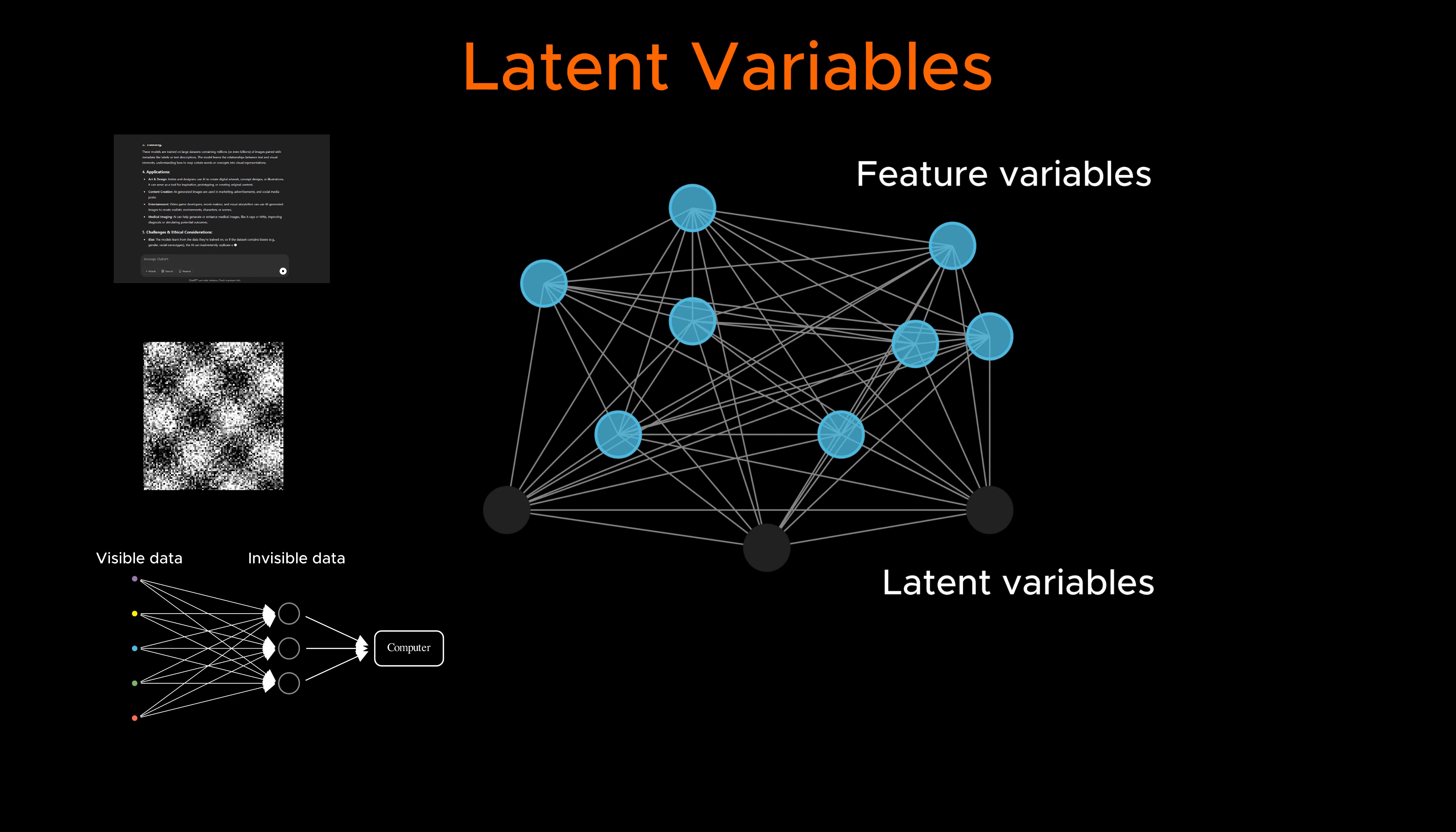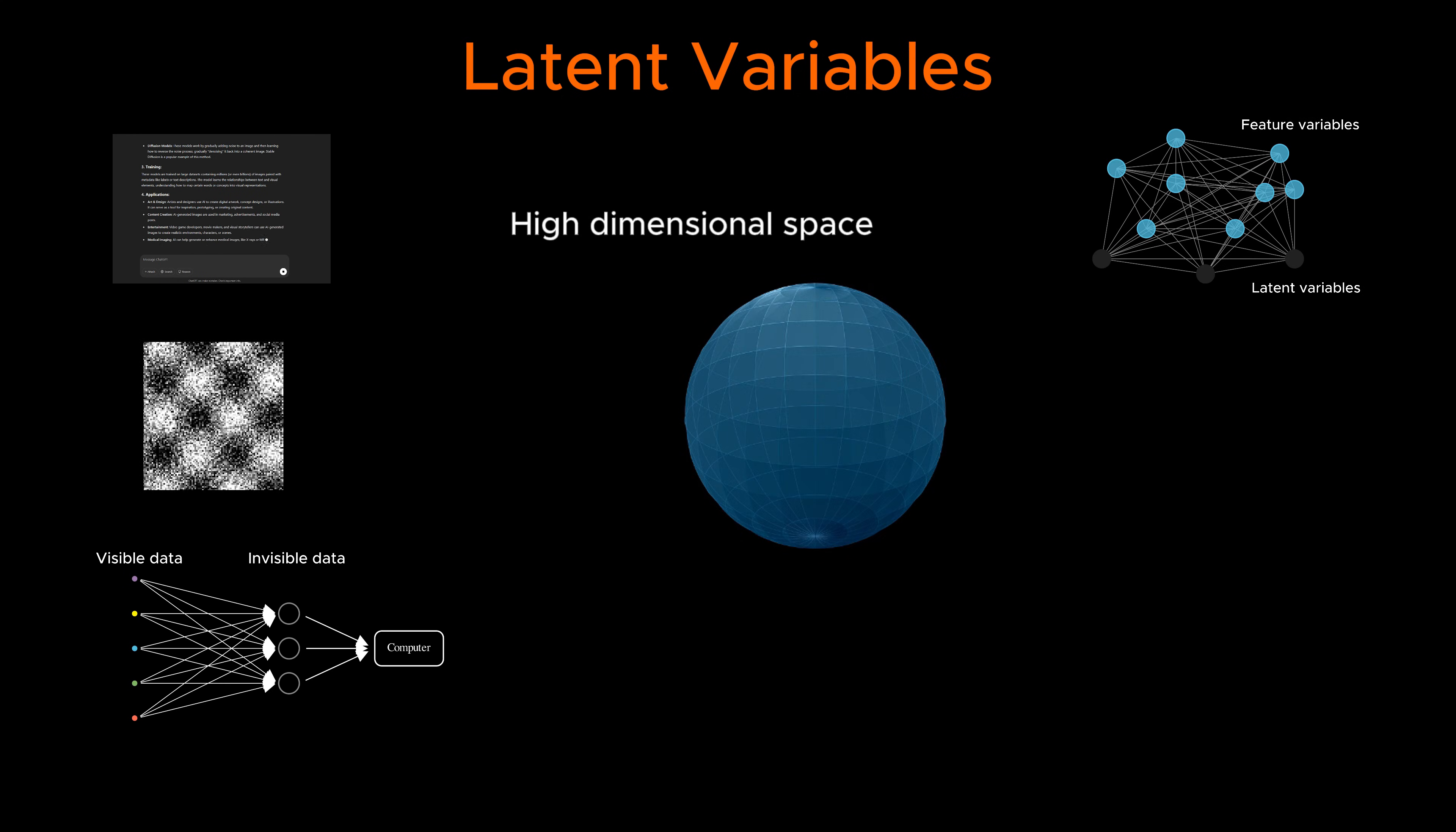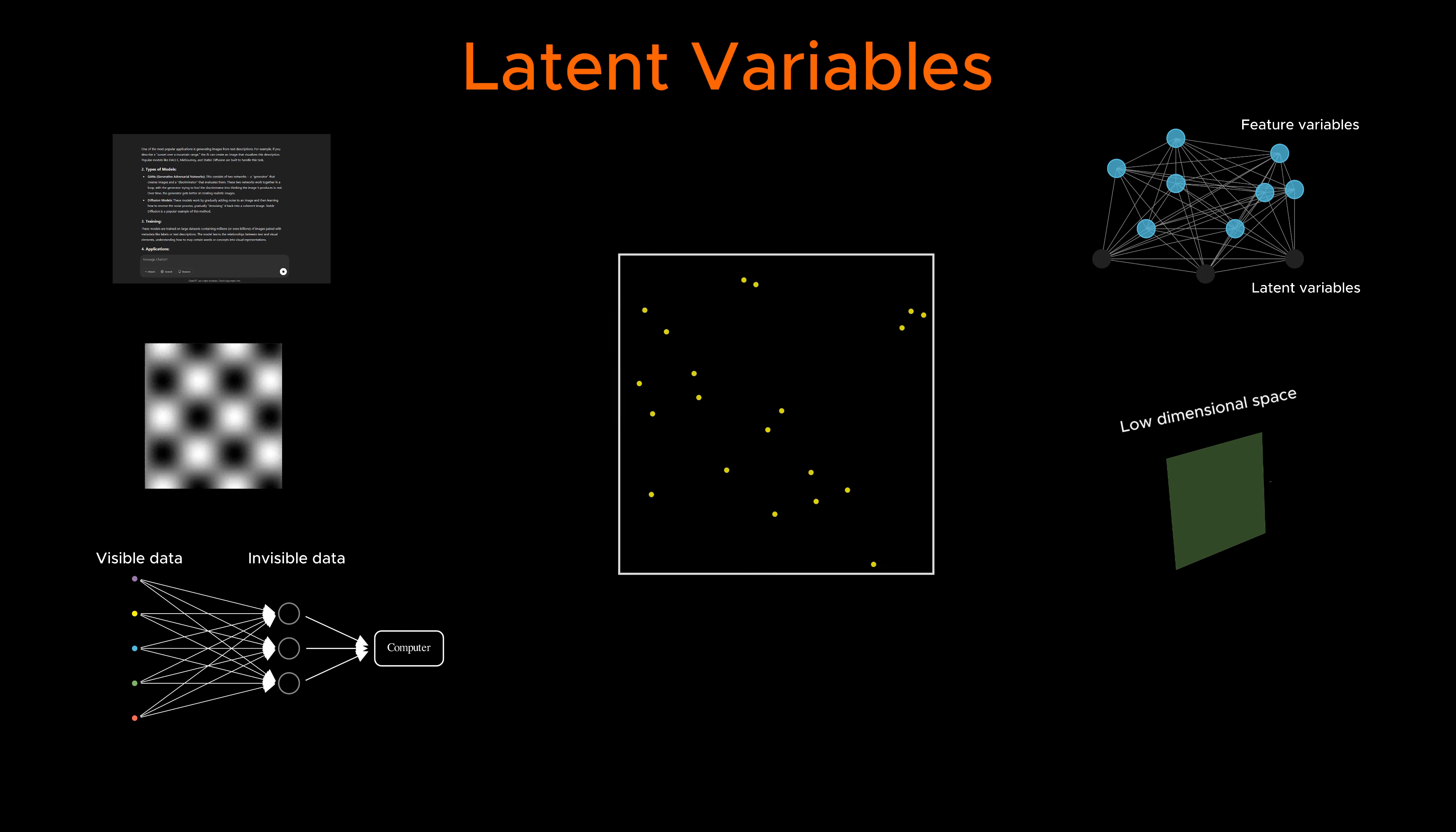And here is a paradox. If we can't see these variables, how can we possibly use them? How do machines learn from something that isn't explicitly observed? And here's an even deeper question: What is the equivalent of this concept in physics? If you are interested to know, stay tuned.